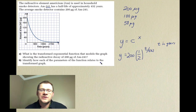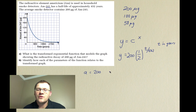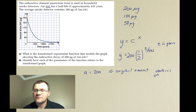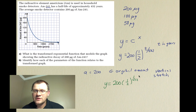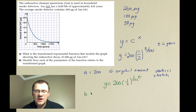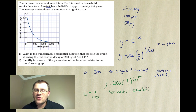Identifying the parameters: the value a = 200 represents the original amount and is a vertical stretch. The equation can be rewritten as y = 200 · (1/2)^((1/432)·t), which means b = 1/432 and represents a horizontal stretch. In this case there are no horizontal or vertical translations.